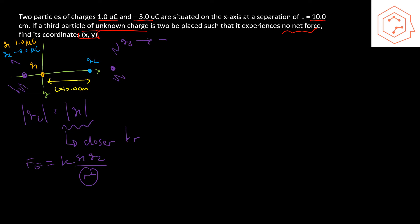The situation to the right of q2 is not what we're looking for. Considering below or above the x-axis: if q3 is negative it is attracted towards q1 and repelled from q2. The only way these forces could cancel is if the two angles are equal, but since the distances are very different, the angles will never be equal. So q3 can only be placed on the x-axis.